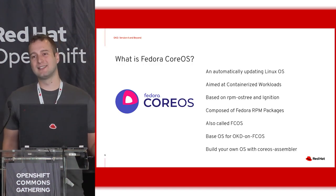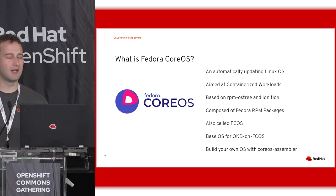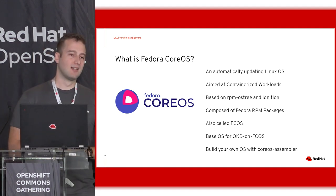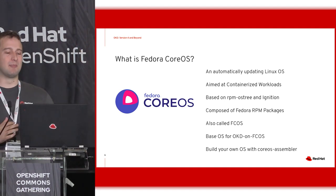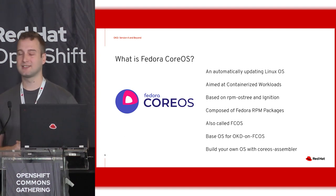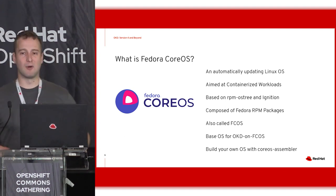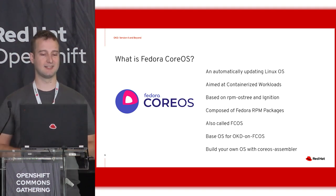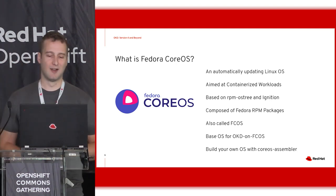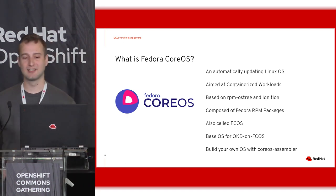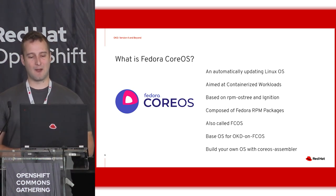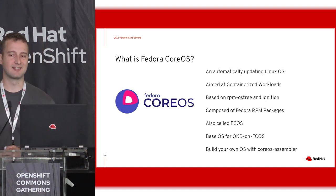What is Fedora CoreOS? In OCP it runs on Red Hat CoreOS, which is not a standalone product — it's an implementation detail of OCP. In OKD, we replaced that with Fedora CoreOS. We're not settled on it having to be Fedora CoreOS and we're open to getting more operating systems supported as base OSes. Right now in the alpha, we chose Fedora CoreOS because it was the path of least resistance. Fedora CoreOS is an automatically updating Linux OS, with automatic updates enabled by default.